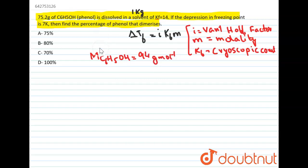The mass of phenol is given to us as 75.2, so number of moles of phenol would be 75.2 divided by 94. When you make the calculation, it will come out to be as 0.8.